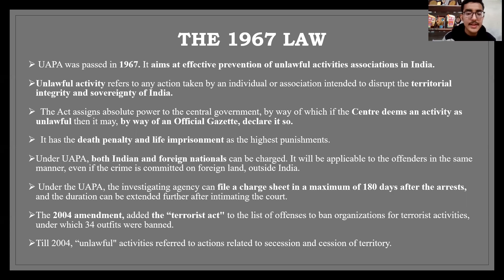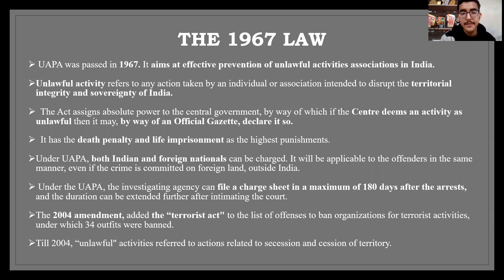The Unlawful Activities Prevention Act, as the name suggests, was passed to prevent unlawful activities happening in India. An unlawful activity is an action taken by an individual or an association to disrupt the territorial integrity or sovereignty of India. Since the Act concerns the sovereignty of India as a whole, the regulations are quite strict. Some of them are: death penalty and life imprisonment are its highest punishments; both Indian and foreign nationals can be charged under it; it gives absolute power to the central government to declare an activity as unlawful just by the passage of an official gazette. Later, in 2004, the Terrorist Act was added to the list.